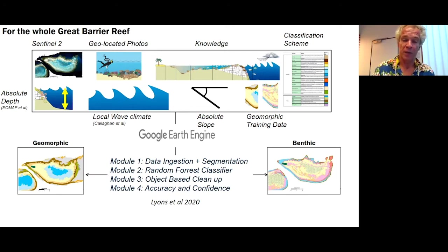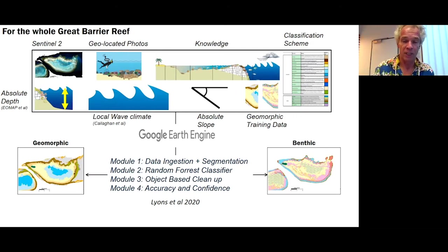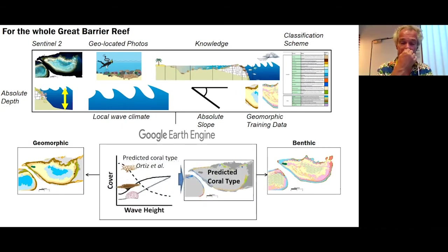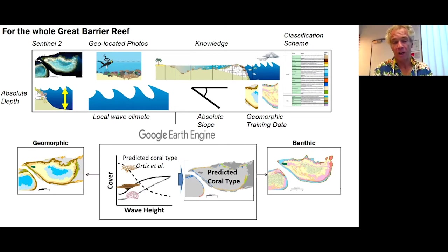We apply a random forest classifier based on the pixels and segments using the different information layers to inform the classifier. Once done, we do an object-based cleanup — for example, if Reef Crest is not neighboring a slope, we assess what's going on. Then we do an accuracy assessment. With these datasets for the Great Barrier Reef, we do something extra: with the help of Juan Carlos Ortiz, who worked at UQ and is now with AIMS, he developed a model for the relationship between wave height and coral cover for different coral types.